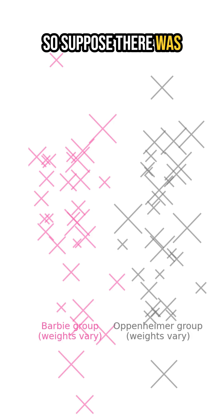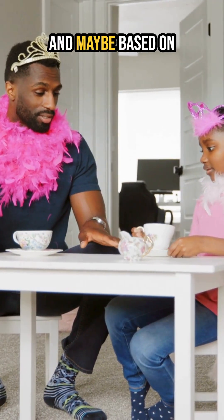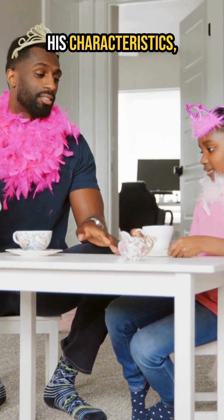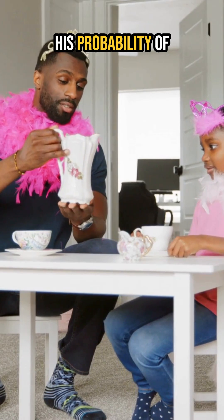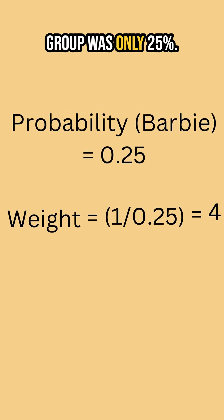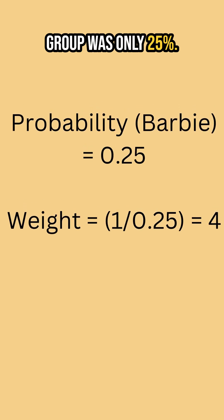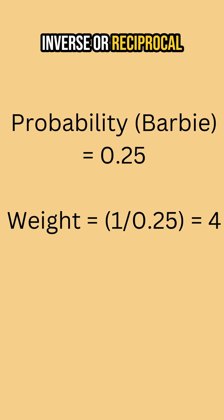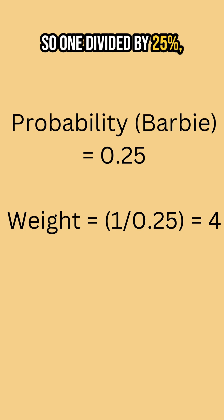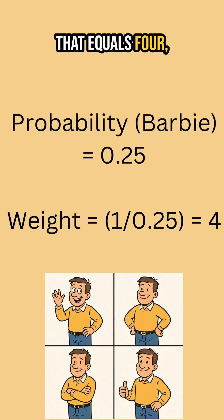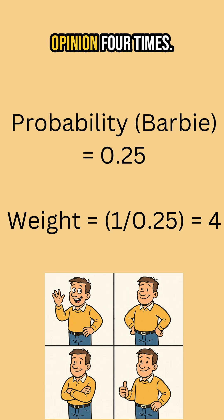Suppose there was a dad who went with his teenage daughter to go see Barbie. And maybe based on his characteristics, his probability of being in the Barbie group was only 25%. In IPTW, we take the inverse or reciprocal of that probability — 1 divided by 25%, which equals 4. That means we would weight his opinion 4 times; we would count him 4 times.